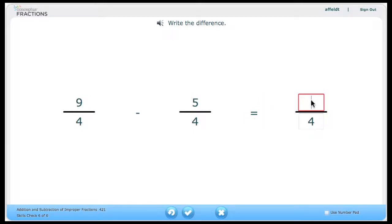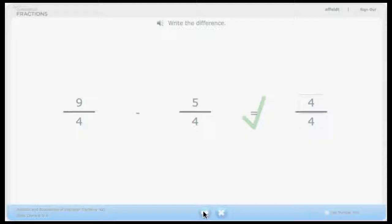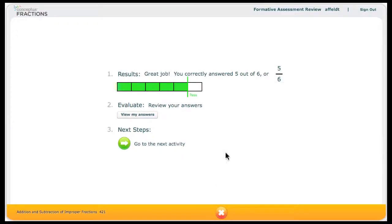Upon completing all of the examples in the formative assessment, Sarah will come to the formative assessment review screen in which she can see her performance. There are three sections in this screen. The first is the results, and it shows her results in the form of a fraction, 5 out of 6, as well as a fraction model. You'll notice that it takes five out of six examples to pass the formative assessment.